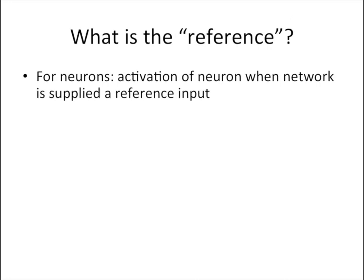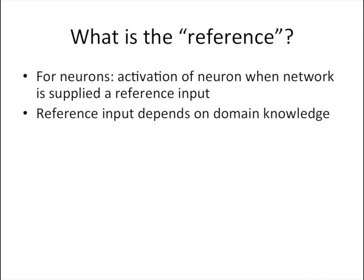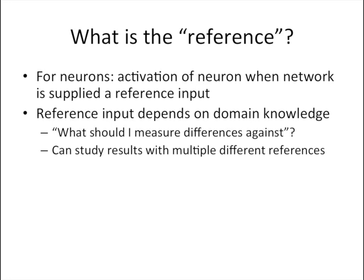So what is this reference value that we keep mentioning? For intermediate neurons in the network, the reference activation of the neuron is defined as the activation that the neuron has when the network is supplied a reference input. The problem then becomes: what is a good reference input? The choice of a reference input depends on domain knowledge, but broadly speaking, one should ask oneself: what am I interested in measuring differences against? It's worth noting that one can study the results on multiple different references if there are many different things you want to compare the values against.